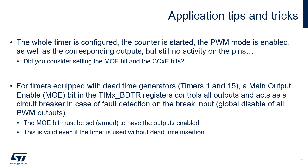A common support case occurs when the whole timer is configured, the counter is started, the PWM mode is enabled, as well as the corresponding outputs, but still there's no activity on the pins. Usually this is because the MOE bit or the CCxE bit wasn't set. The CCxE bit in the TIMx_CCER register defines the configuration of a CCx channel as input or output, and the CC1E bit must be set to get a PWM signal on the CH1 channel. For timers equipped with dead-time generators — timers 1, 16, and 17 — the main output enable or MOE bit in the TIMx_BDTR register controls all outputs and acts as a circuit breaker in case of fault detection. The MOE bit must be set to have the outputs enabled, even for general-purpose applications.